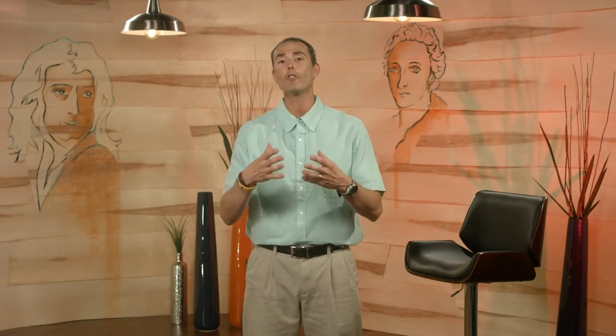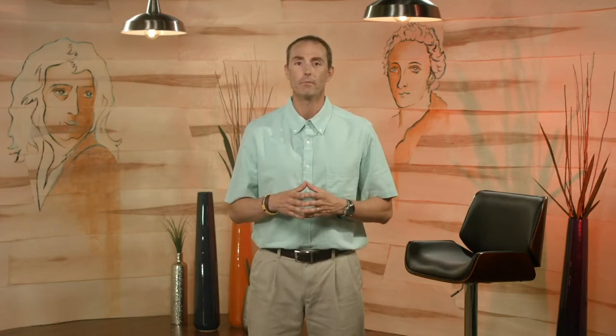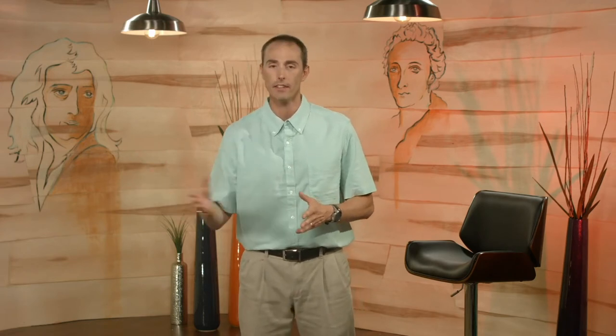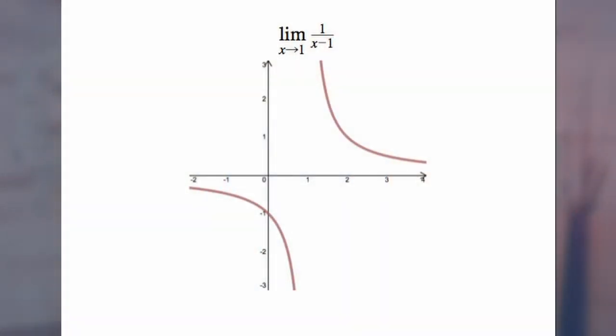The big adjustment for students is they need to understand that we can now reach a conclusion of infinity — that doesn't necessarily have to coincide with the conclusion of 'does not exist.' For instance, consider the limit as x approaches 1 of 1 over (x minus 1).